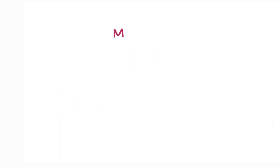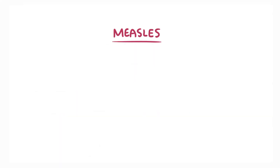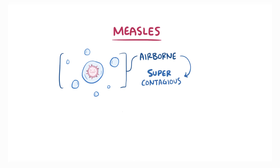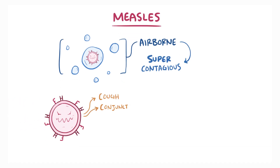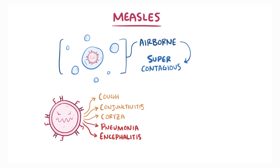Quick review of measles: Measles is an airborne pathogen that's highly contagious, and causes cough, conjunctivitis, and coryza, as well as complications like pneumonia and encephalitis, and can be prevented through vaccination.